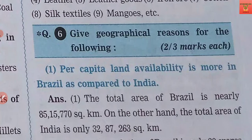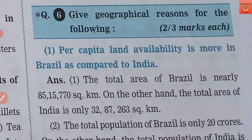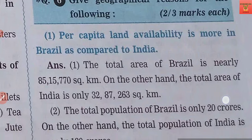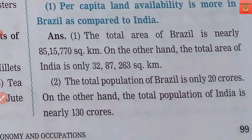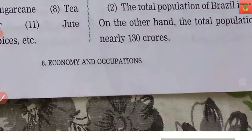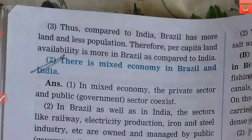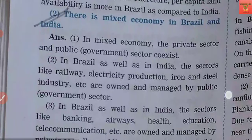The first give-reason question, worth two to three marks: Per capita land availability is more in Brazil as compared to India. The reason is that Brazil has more land compared to India, and Brazil's population is much less than India's — about 20 crores — whereas India's total population is 130 crores, which is almost six to seven times more. Because of this, resources in India are under considerably more pressure.